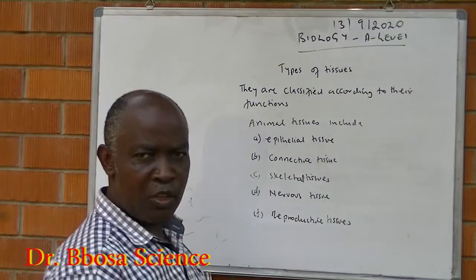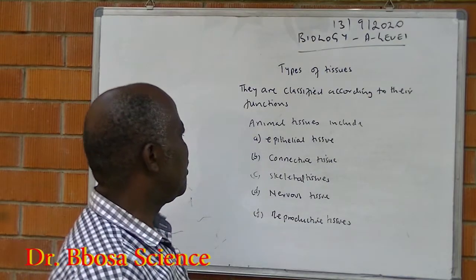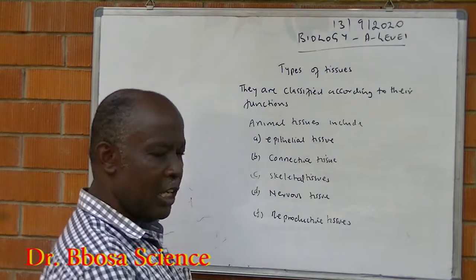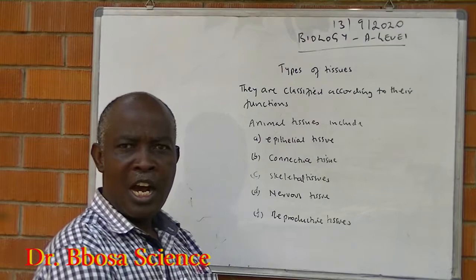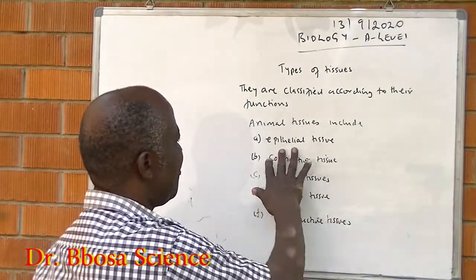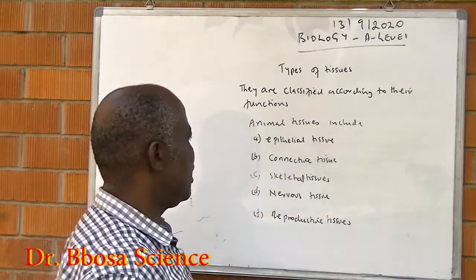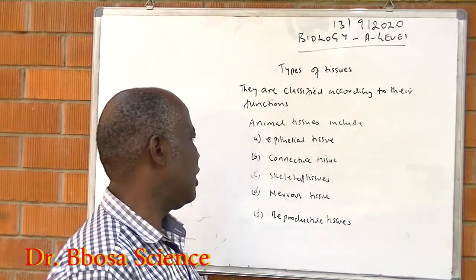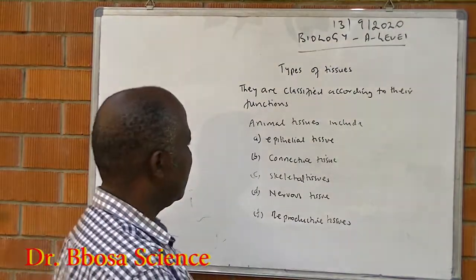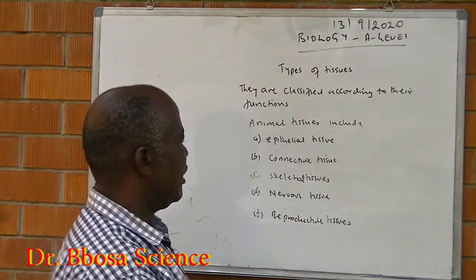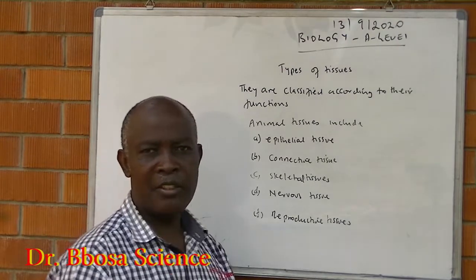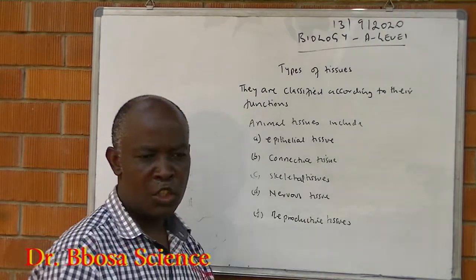Types of tissues. Tissues are classified according to their functions. Animal tissues include epithelial tissues, connective tissues, skeletal tissues, nervous tissues, and reproductive tissues.